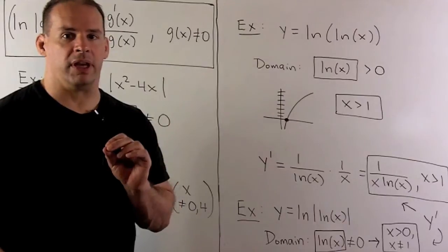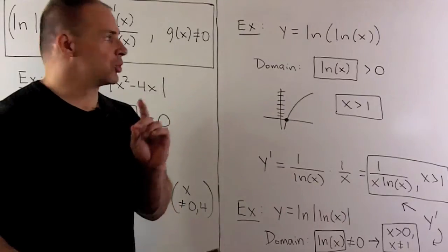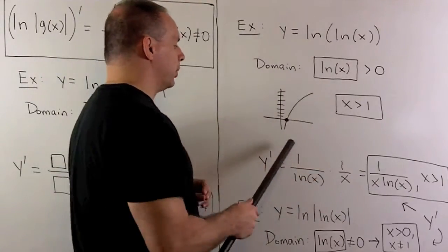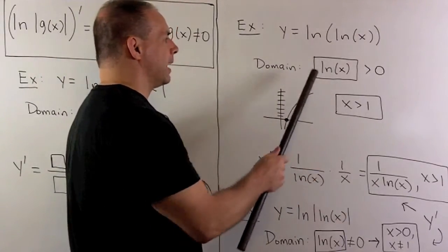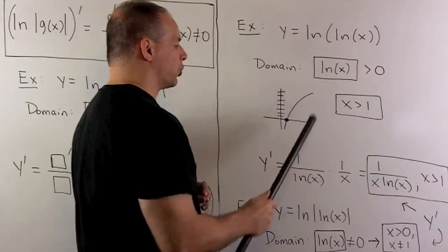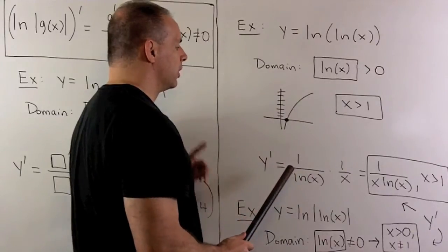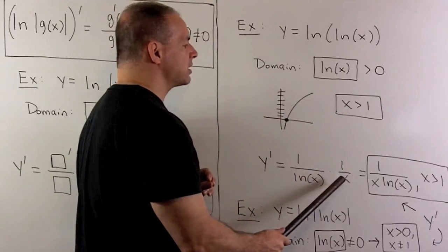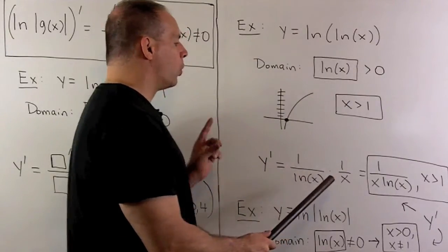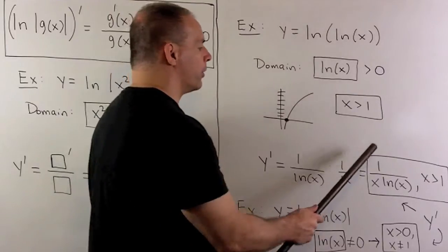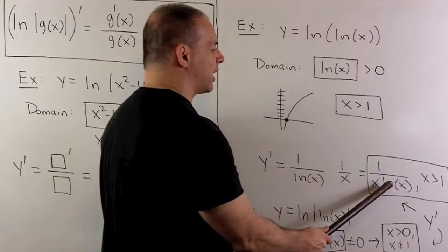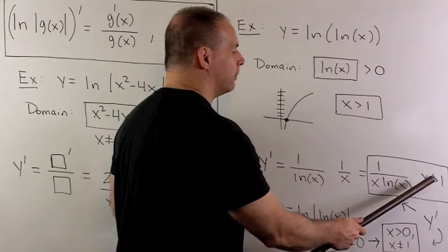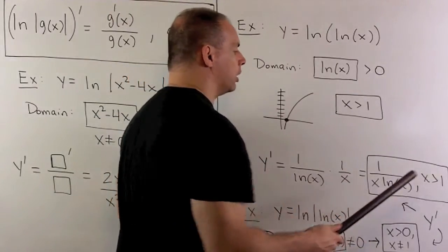To differentiate, we flip what's in the box and multiply by its derivative: one over natural log of x times one over x, giving one over x times natural log of x, with the restriction that x be greater than one.